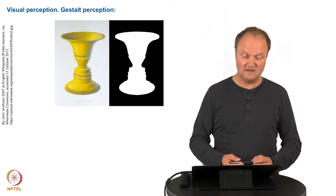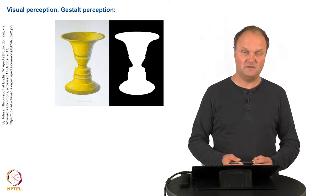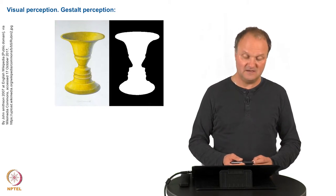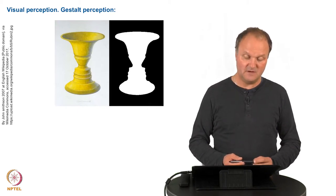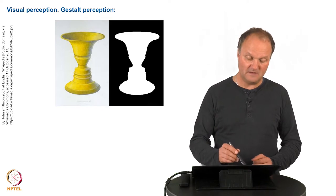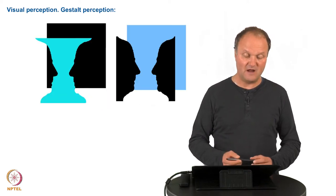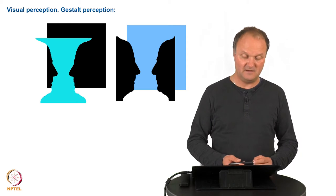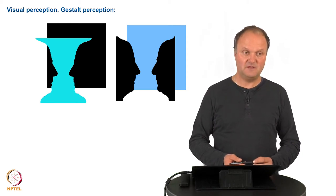On the right hand side you might see the same object but it seems more that these are two faces looking at each other. And this even becomes more apparent when you separate the figure from the ground as it is shown in this panel here. So it seems that there is a combination of these laws which governs what we actually see.